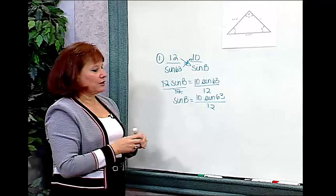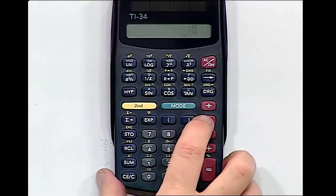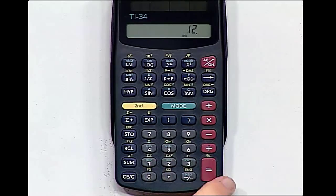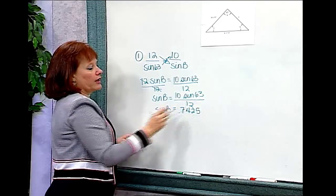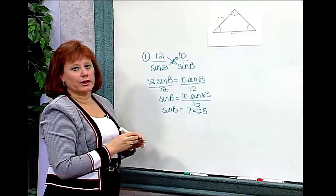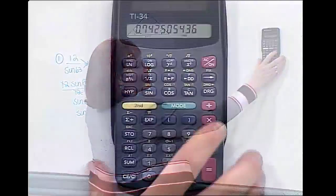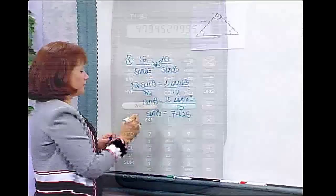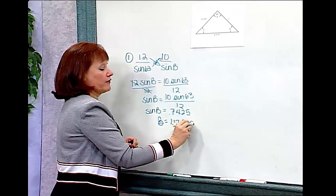Now I'll find sine B using my calculator. I take 10 times the sine of 63, then divide by 12, and get 0.7425. So the sine of B equals 0.7425. To find angle B itself, I use the inverse sine function — hitting second, then sine — and get 47.9453 degrees.